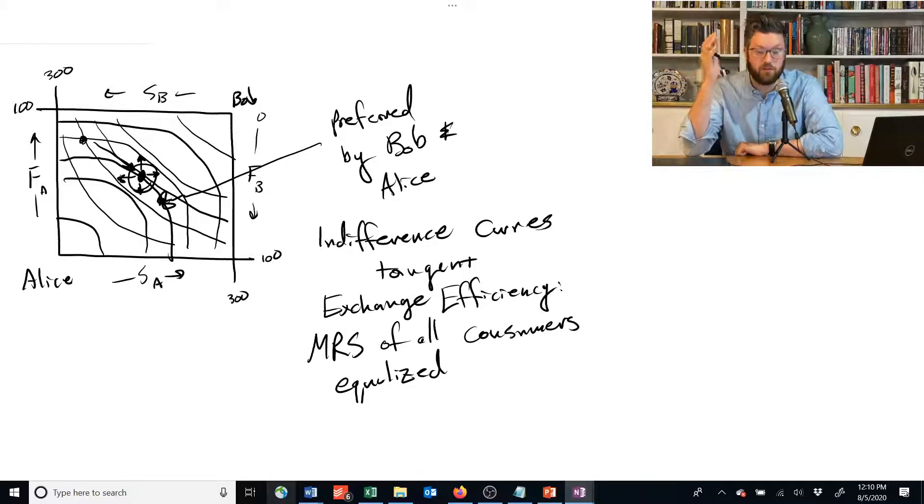And this is our criteria for exchange efficiency. It's exactly the same as the criteria for input efficiency, except it's the marginal rate of substitution, which is the slope of an indifference curve, instead of the marginal rate of technical substitution, which is the slope of an isoquant.